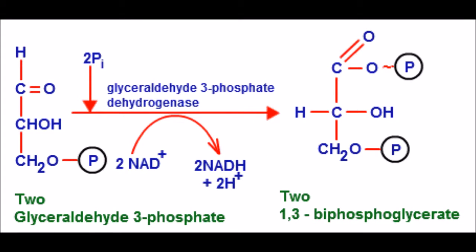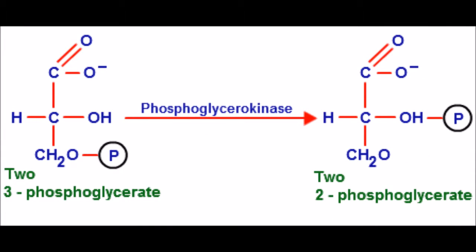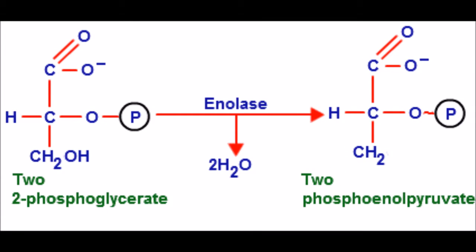NAD+ enters the cell with a phosphate. NAD+ then picks up a proton and two electrons which cancels out the charge, leaving it as NADH + H+. ADP takes a phosphate from one 3-carbon molecule, turning it into ATP. This step is repeated.